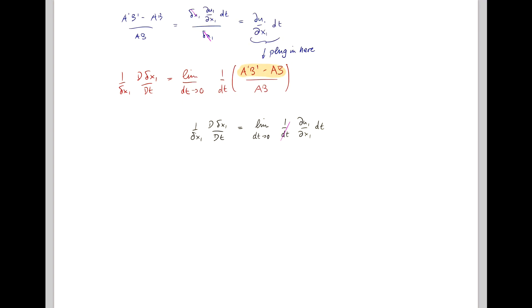limit of dt going to 0, 1 over dt times du1/dx1 dt. And now since, again, 1 over dt and dt cancel, our right-hand side becomes independent of dt, so we can just write this as du1/dx1, which we have shown earlier is just our 1,1 element of our strain rate tensor.